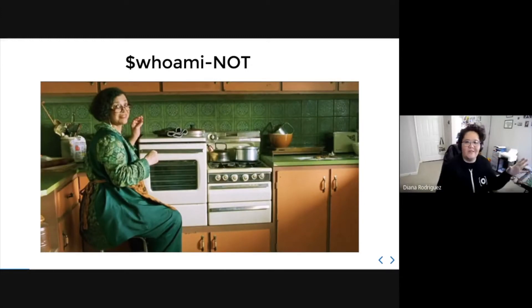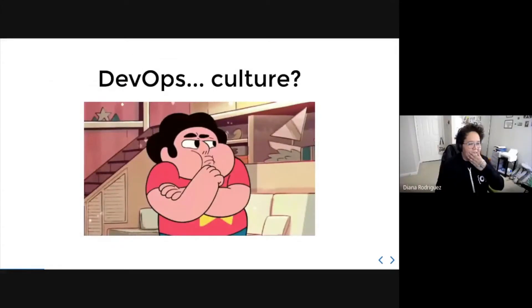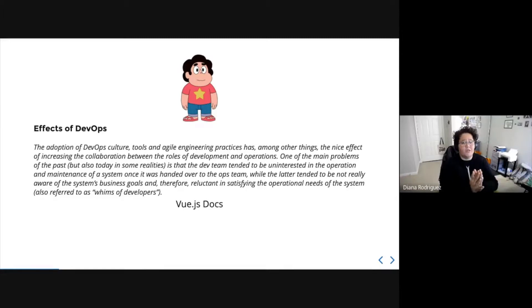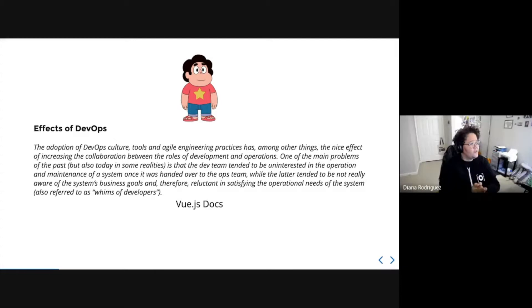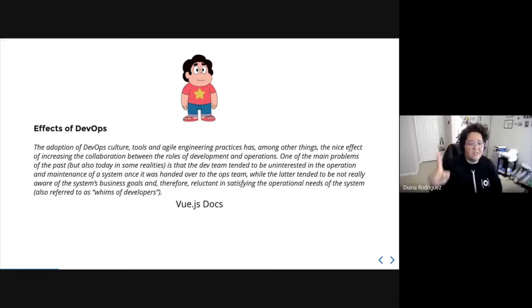If you don't recognize her, that's the Oracle — a cool reference from the Matrix. So, DevOps culture — what is this? I like the Vue.js documentation. I'll read this paragraph with you. The adoption of DevOps culture, tools, and agile engineering practices has, among other things, the nice effect of increasing the collaboration between the roles of development and operations. First key takeaway: increase collaboration between development and operations.